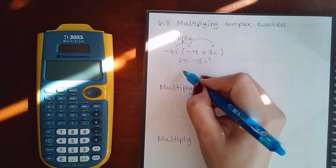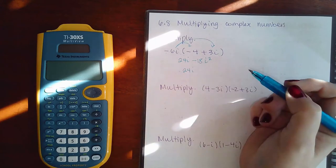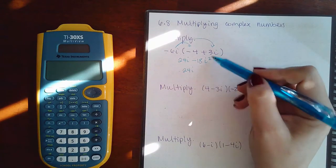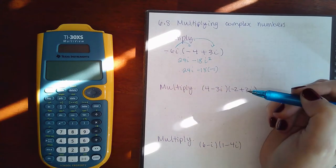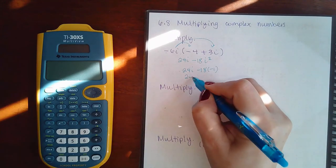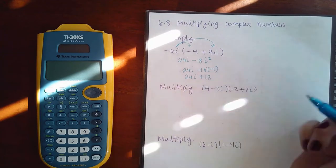So we know that 24i will remain the same, but i squared actually becomes a negative 1 by definition. So this becomes 24i and then plus 18.